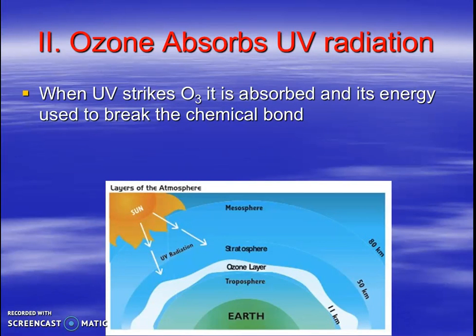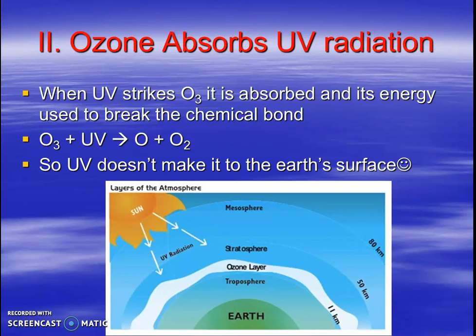So again, in word form: when UV strikes the O3, it absorbs that energy and it's able to break the chemical bond between one of the oxygen atoms and the other two oxygen atoms. So UV is then not able to hit the Earth's surface. Thank goodness, because even when I put on some sunscreen, I still worry about those UV rays — they can be cancerous.